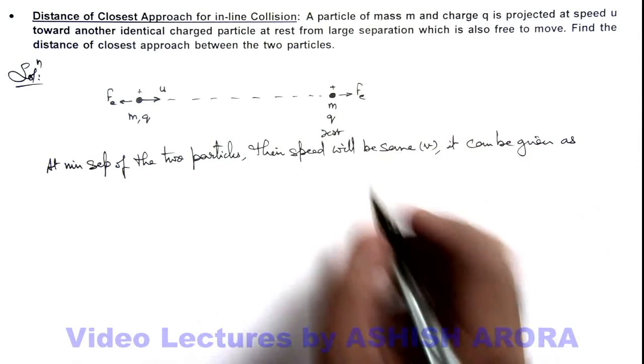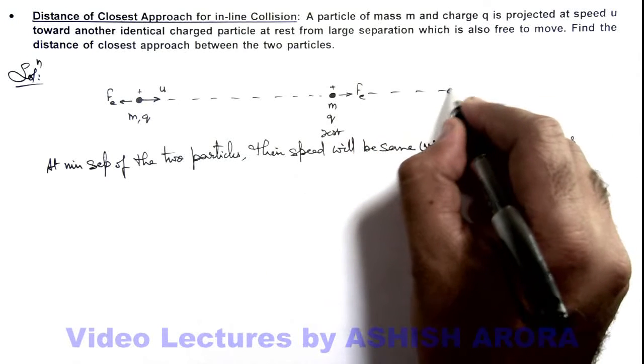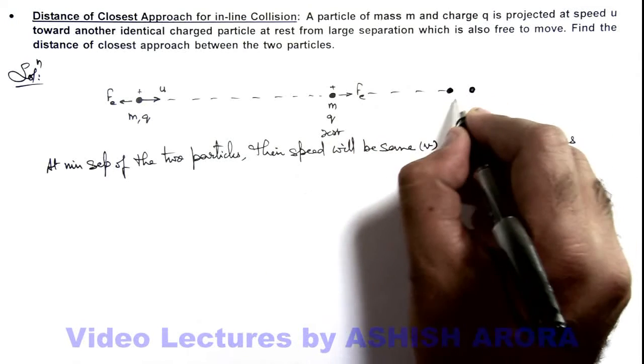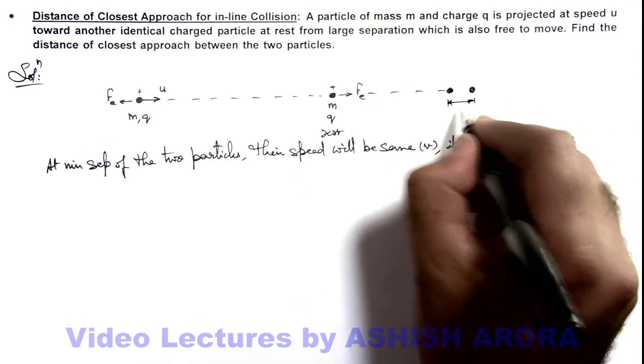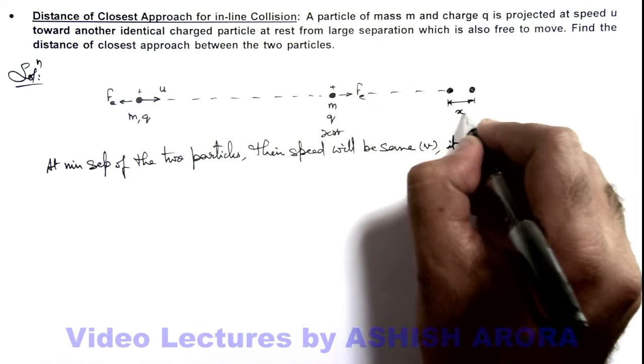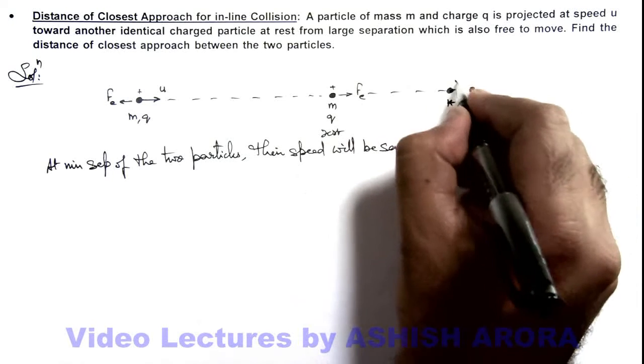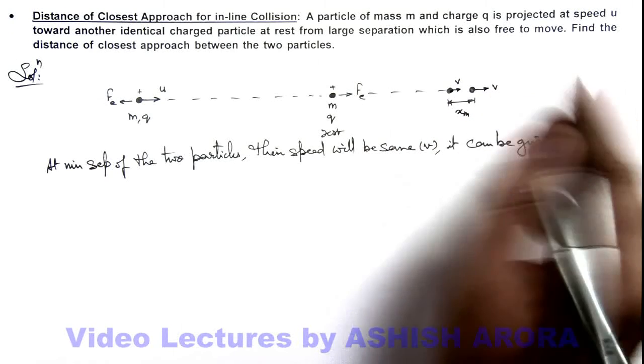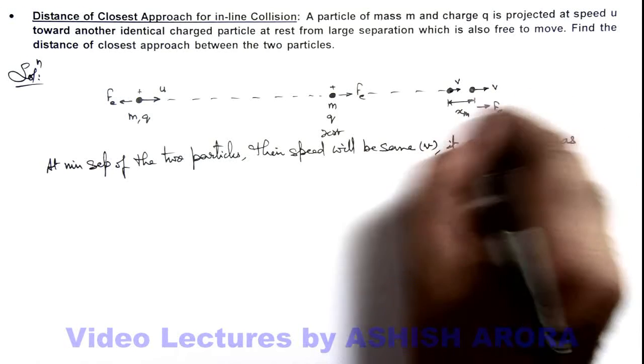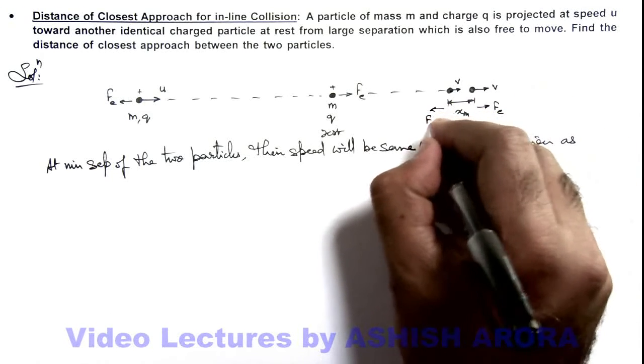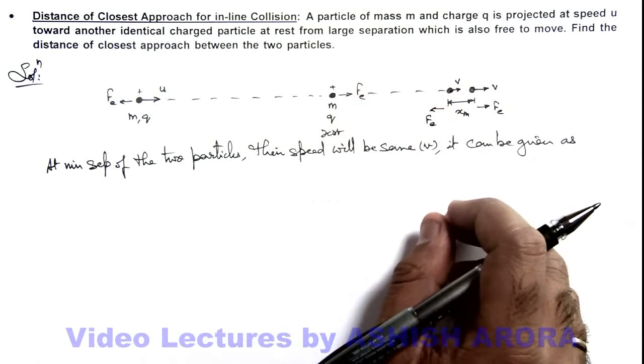You can consider, after some time the two particles are at minimum separation. Say that separation is taken as x_m. The two would be moving with the equal speed v, because afterwards the repulsive force will increase this speed and decrease this speed, so their separation will start increasing.